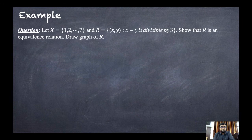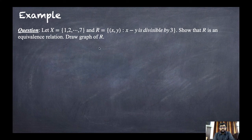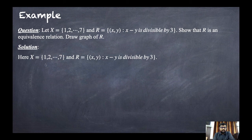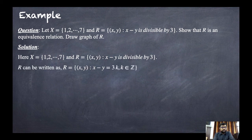Example 2: Let capital X be the set {1, 2, 3, 4, 5, 6, 7}. The relation R is defined as the set of all (x, y) such that x minus y is divisible by 3. Show that R is an equivalence relation and draw the graph of R.